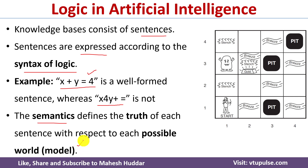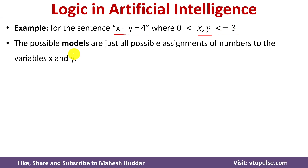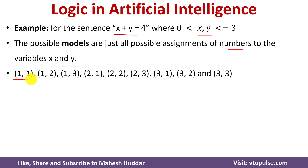What is a model? Consider the sentence x plus y equals 4, where x and y are greater than 0 and less than or equal to 3. A model is nothing but each possible assignment of numbers to the variables x and y. We can assign values such as x=1, y=1; x=1, y=2; x=1, y=3; x=2, y=1; x=2, y=2, and so on. These are the models for the given sentence.